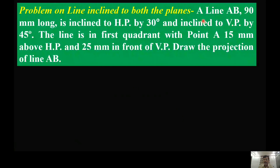The given problem is: a line AB, 90 mm long, is inclined to HP by 30 degrees and inclined to VP by 45 degrees. The line is in the first quadrant with point A 15 mm above HP and 25 mm in front of VP. Draw the projection of the line.